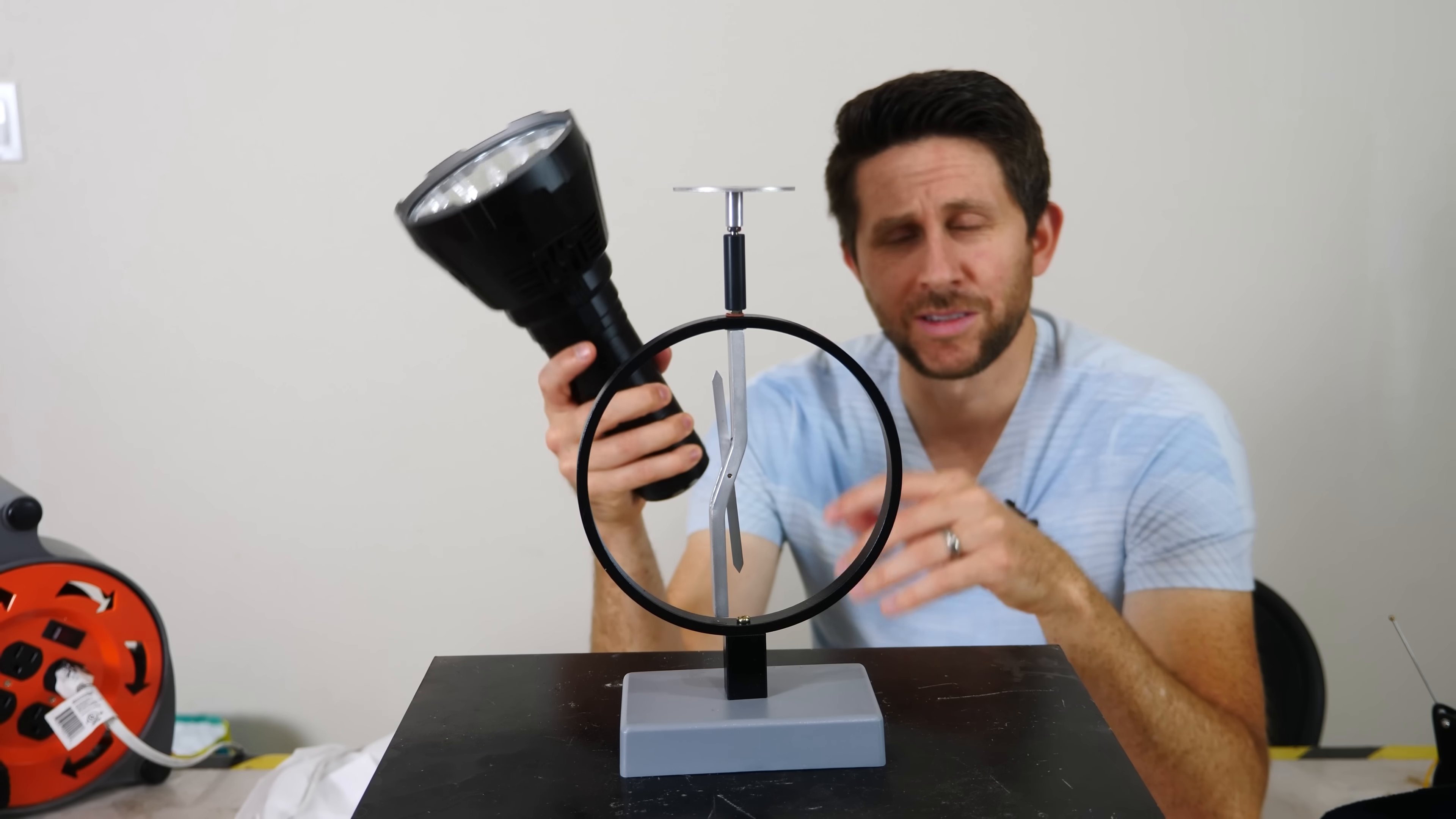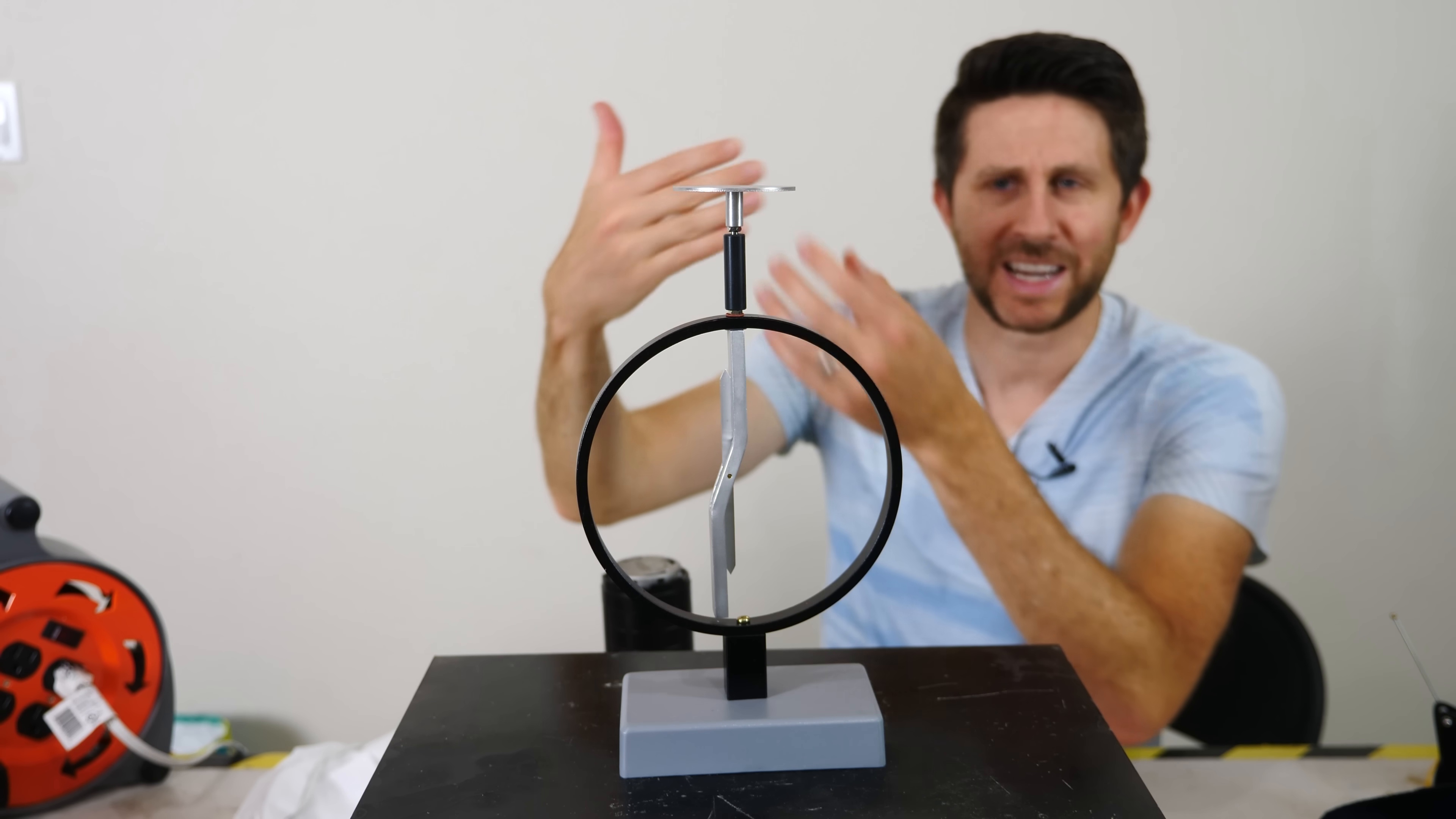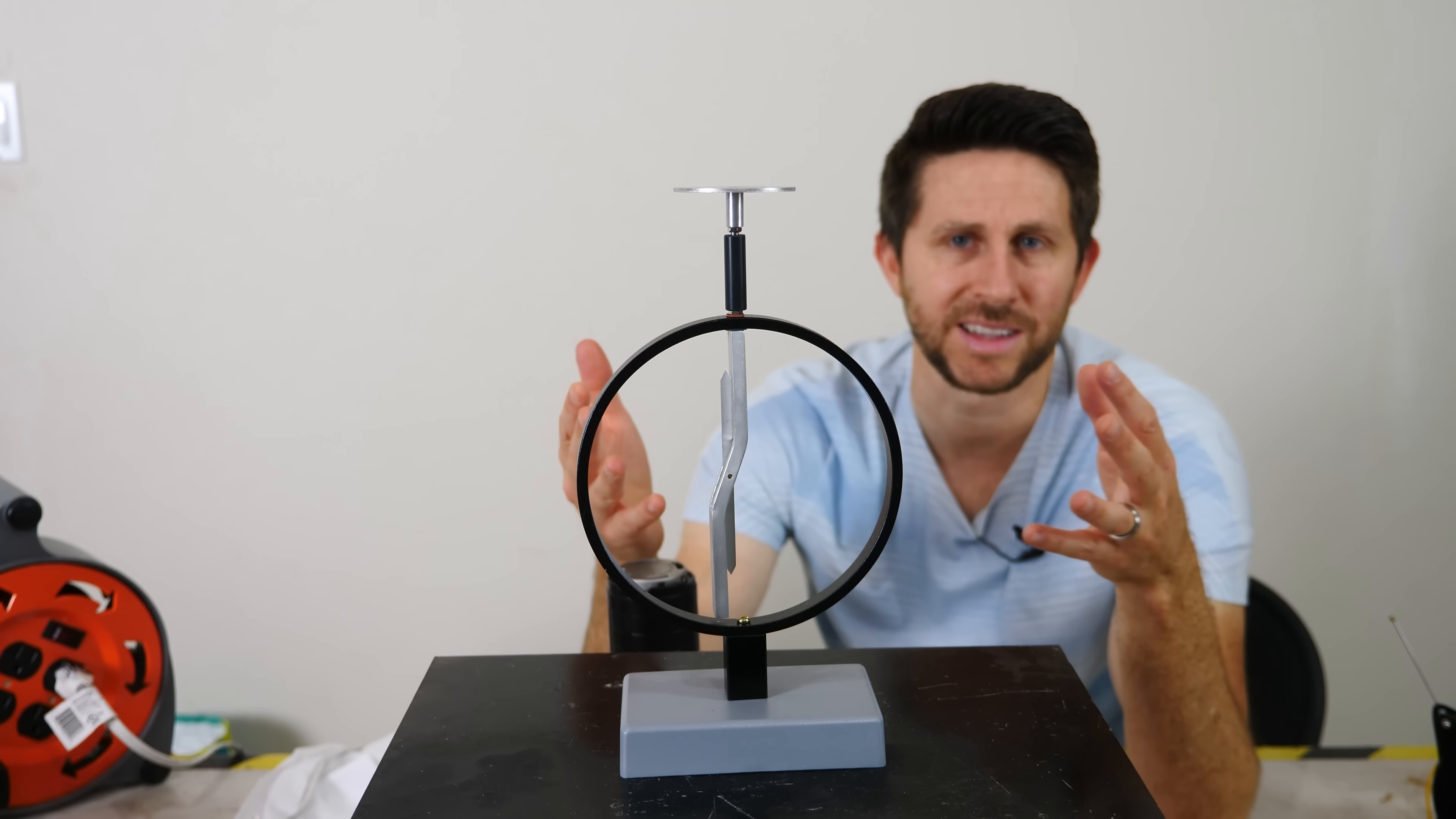So if light were only a wave, then that means that it doesn't matter what the frequency of light is that you use. If you just use enough of it, then you should be able to knock electrons loose. For example, if you just get a high enough amplitude and really big waves of light coming in, you should be able to discharge this plate. But you can see that I used a 100,000 lumen flashlight here and I couldn't do anything. So hitting electrons with a bunch of low frequency light doesn't do anything to knock them loose.